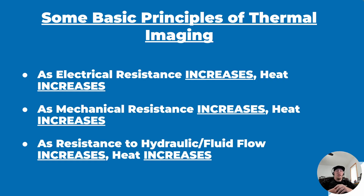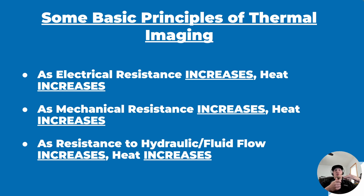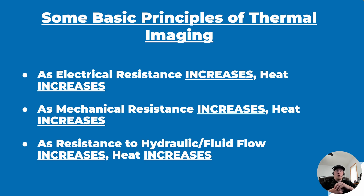There are three basic principles to keep in mind when using your thermal imager. The first: as electrical resistance increases, temperature also increases. If we have higher resistance, the current cannot flow like it wants to, which causes a buildup of heat. So if you're looking at a couple of different connections — say, two connectors on an ECM doing the same basic function with approximately the same amount of current traveling through them — you would expect to see a fairly symmetrical temperature between the two. We'll give you some examples with actual thermal images so you can see what that looks like.